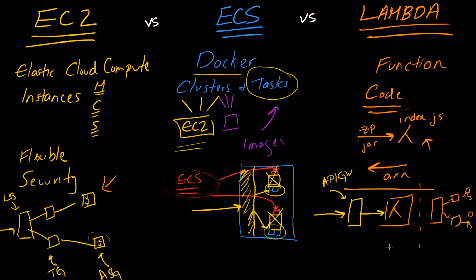To recap everything: with EC2 you manage infrastructure, pick the type and size, and get extreme flexibility — but you must handle security and complexity. With ECS you operate in the Docker ecosystem: images get associated with tasks, tasks deploy into clusters, and clusters run on a fleet of EC2 machines or abstract computing units with Fargate. Clusters manage a certain number of tasks at any time and can attach load balancers. Lambda works at the scale of functions or code — no EC2 machines, no Docker containers — and can be combined with other AWS services for rich functionality.